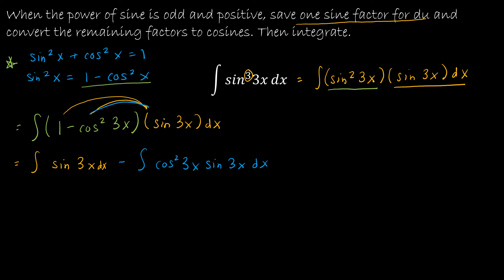Now I have two separate integrals I can actually evaluate. For the first integral — the integral of sin(3x) — the integral of sin(x) is −cos(x), so the integral of sin(3x) is −(1/3)cos(3x). The 1/3 accounts for the chain rule: the derivative of cos(3x) is −sin(3x) times 3, so the negatives and the 1/3 and 3 cancel, giving back sin(3x). So the first part is −(1/3)cos(3x).